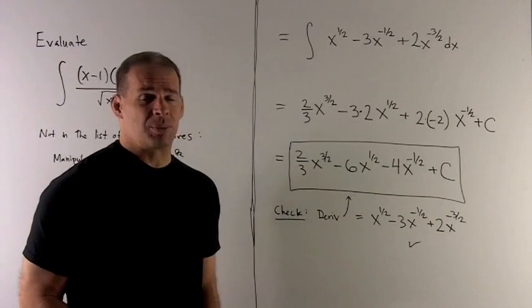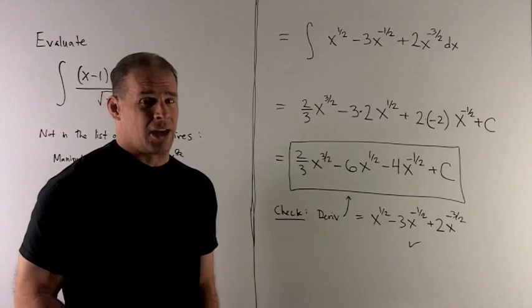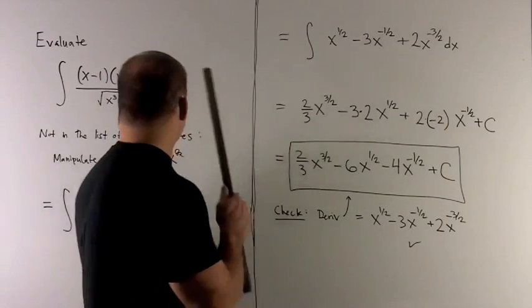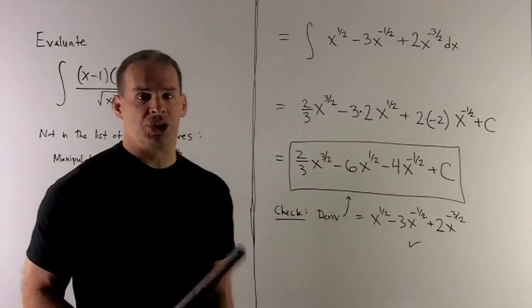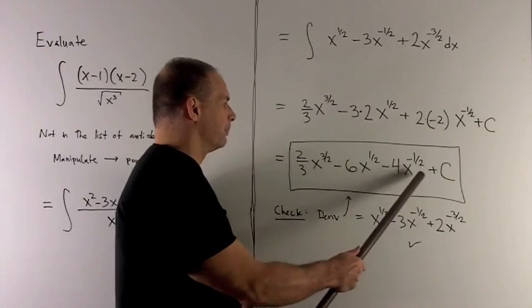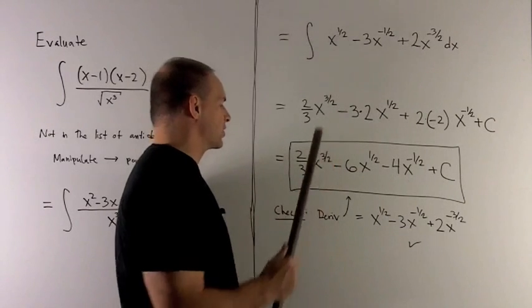We can check this by just taking the derivative. That'll get us to our form up here. It won't get us to our original form that we had to manipulate, but that's fine. We'll just check whatever we can.